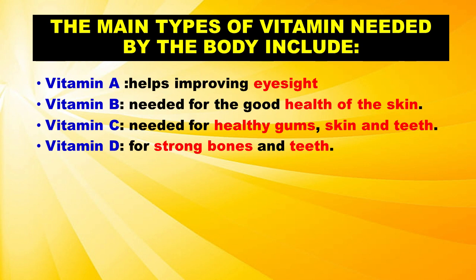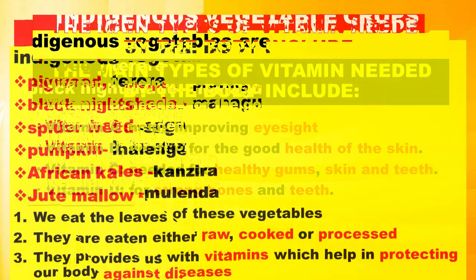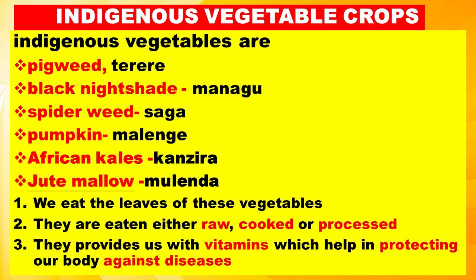Indigenous vegetables include pigweed, black nightshade, spiderweed, pumpkin, African kales, and jute mallow. We eat the leaves of these vegetables. They are eaten either raw, cooked, or processed. They provide us with vitamins which help in protecting our body against diseases.